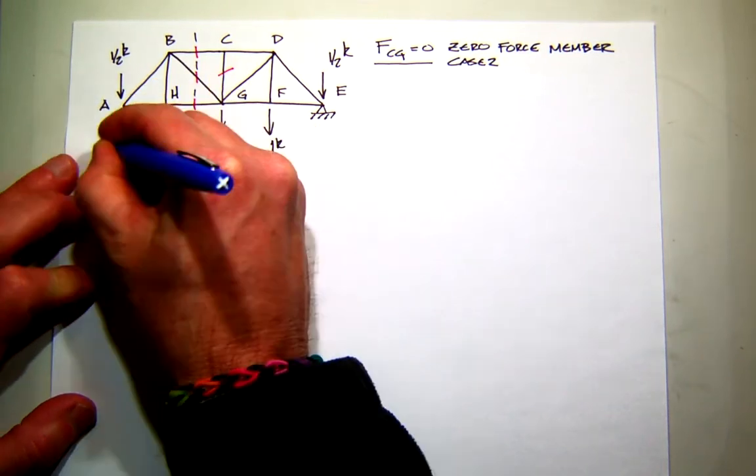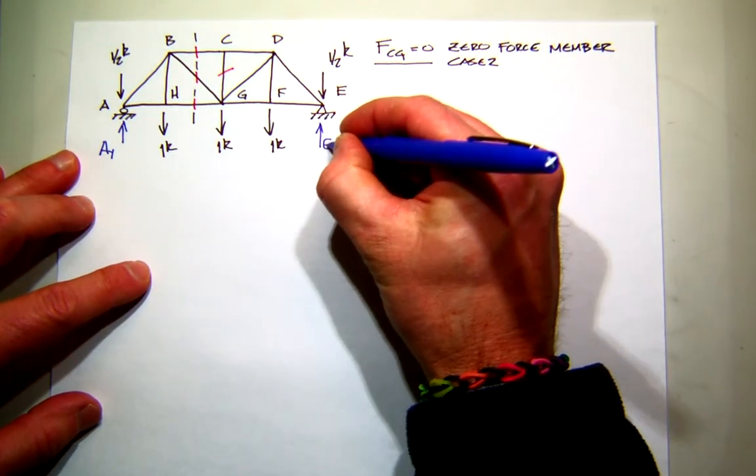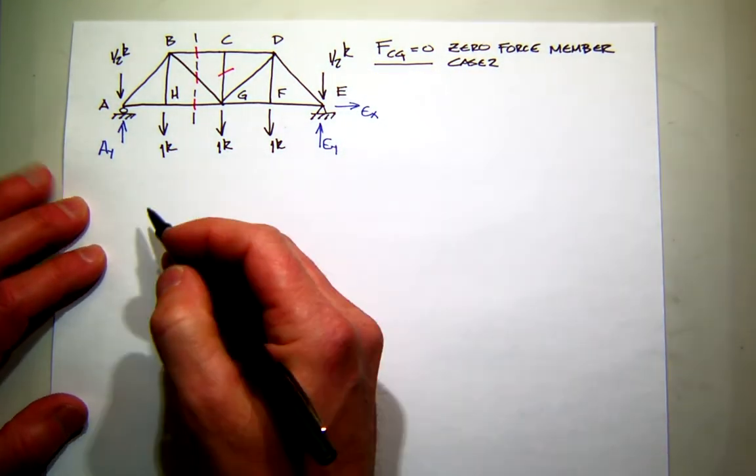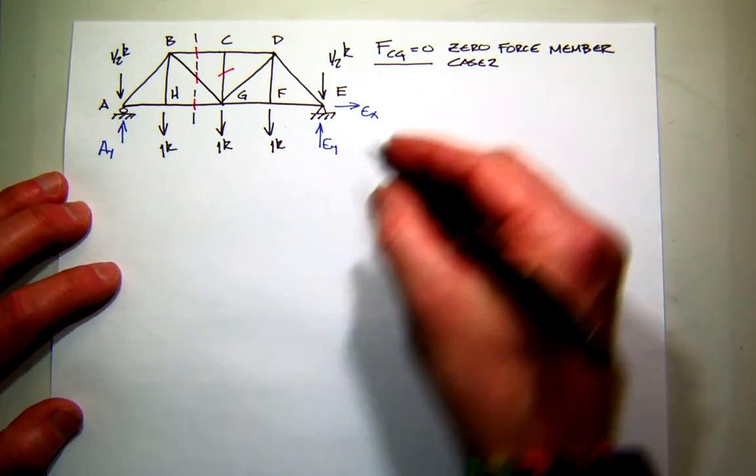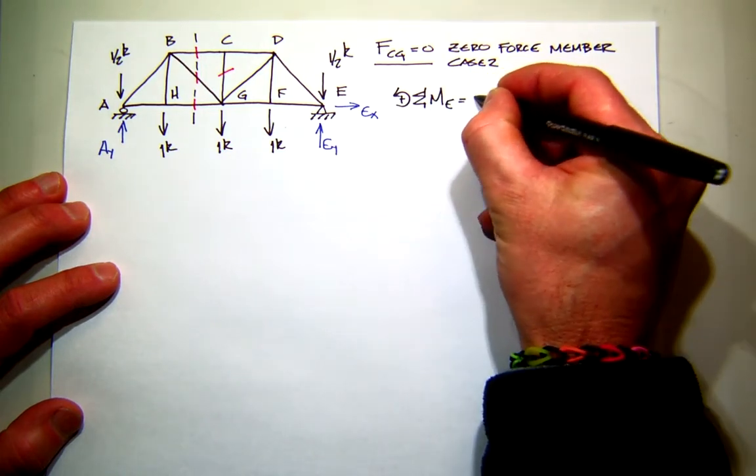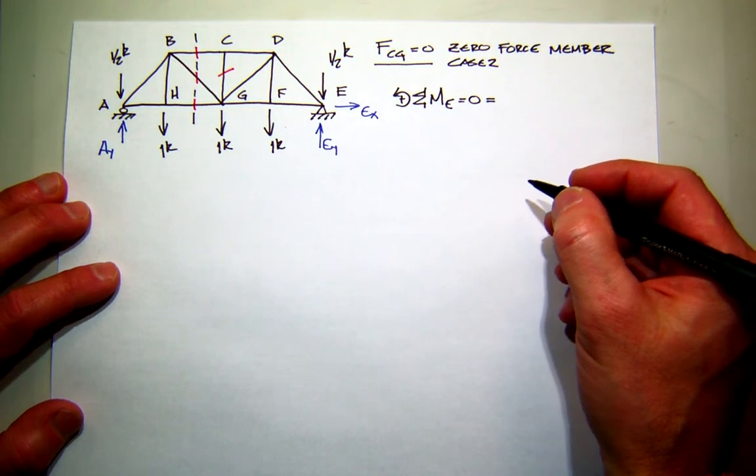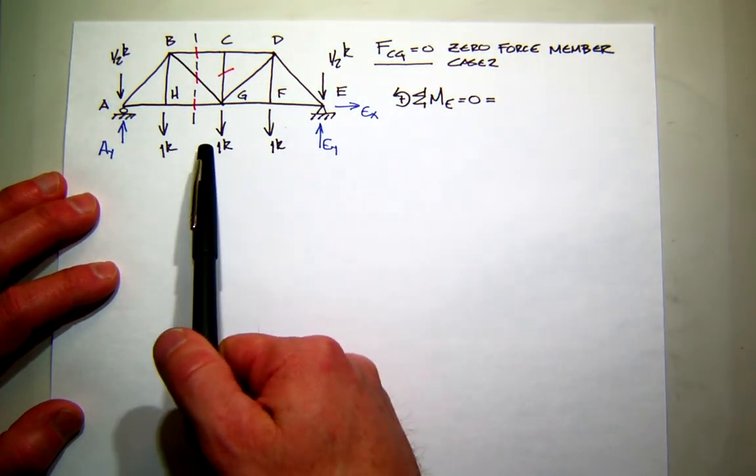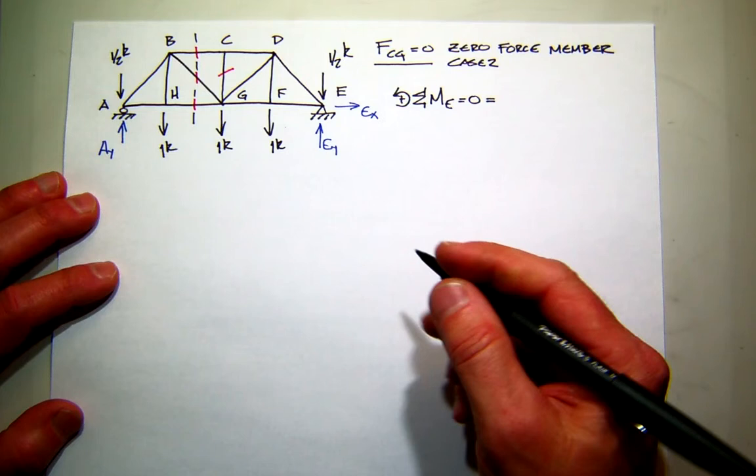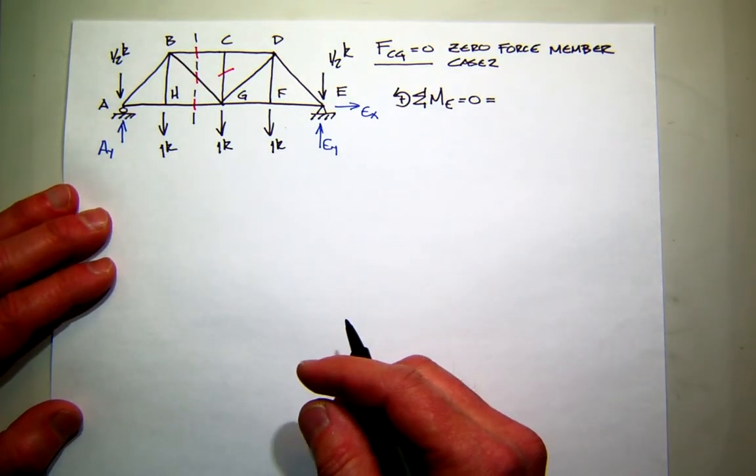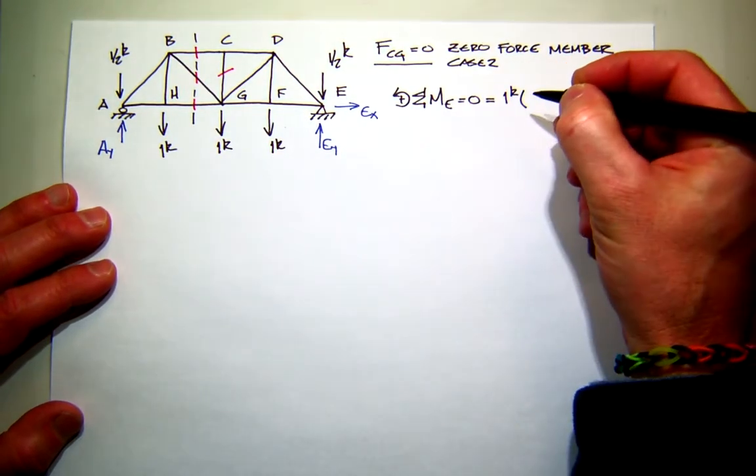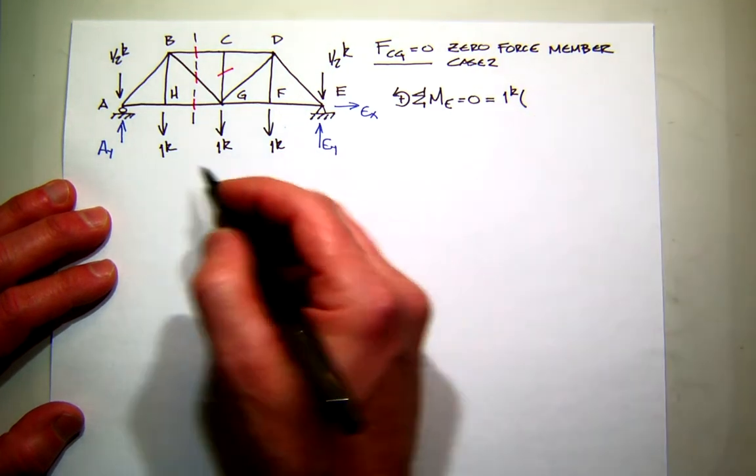So I'll have A_y, E_y at the pin, and E_x. Now, how can I find A_y quickly? Yeah, let's sum the moments about E. Okay, I'm using the right-hand rule. Now if you look carefully, all these forces, one kip, one kip, one kip, half kip, right, they're all creating positive moment about E. What I'm going to do first is, since these one kip are all constant, I'm going to factor the one kip out and then multiply them by their respective distances.